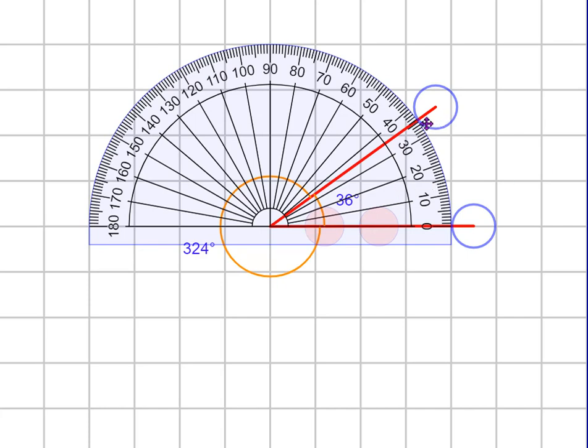So that's how you use a protractor normally. You've just got to make sure that your zero line matches with one of the lines of your angle, and that way you can figure out the angle when you see where that other line intersects with these little markings up here.